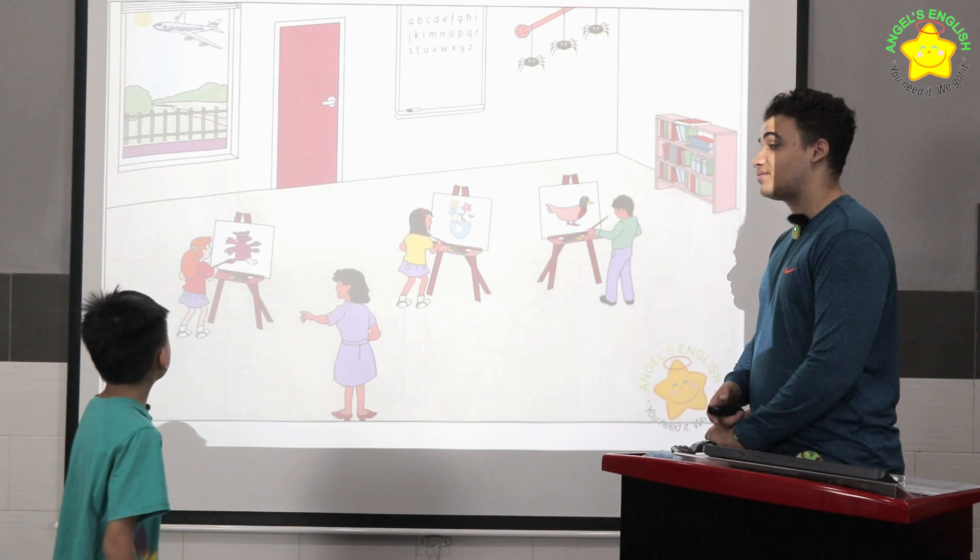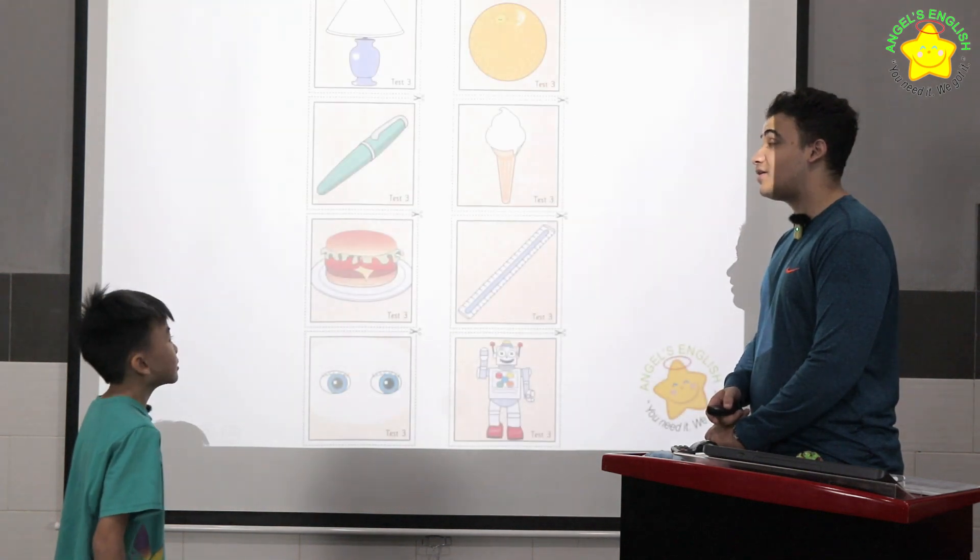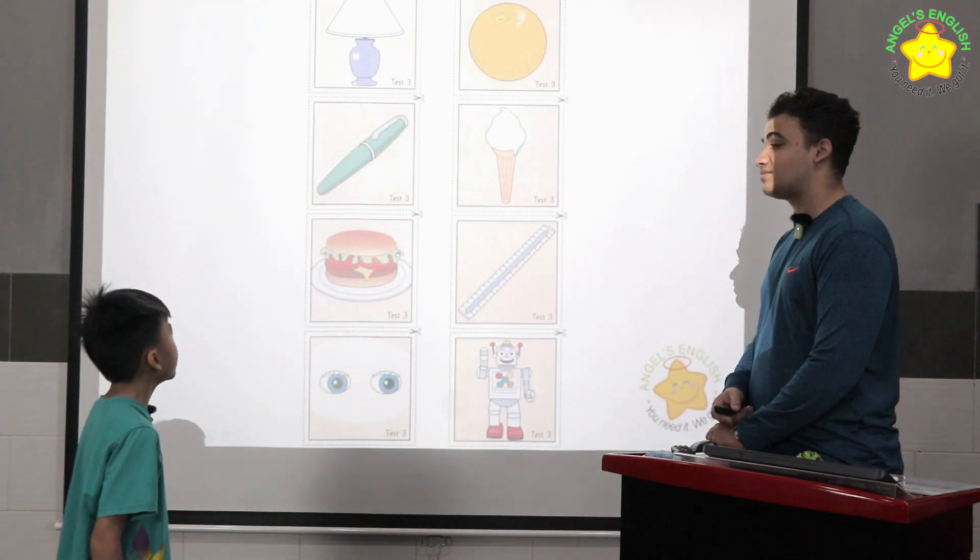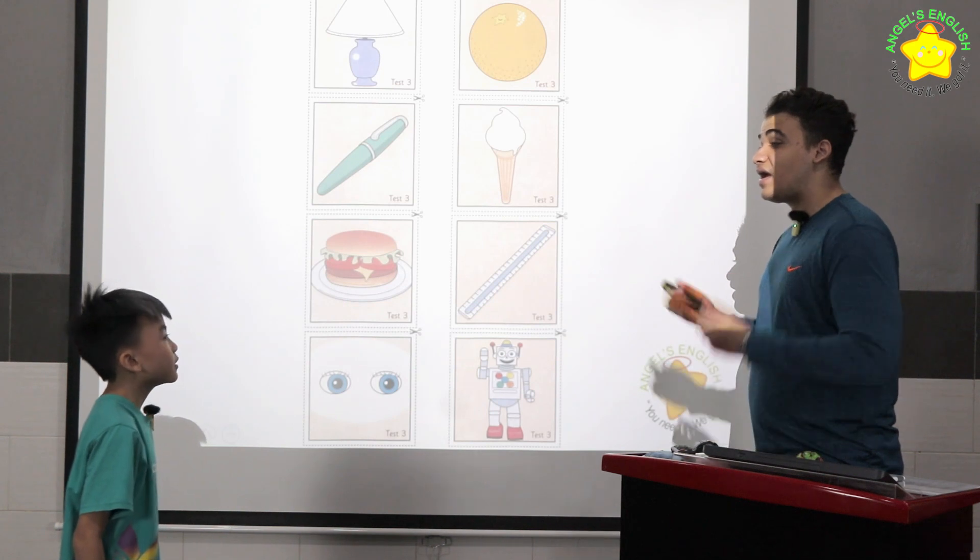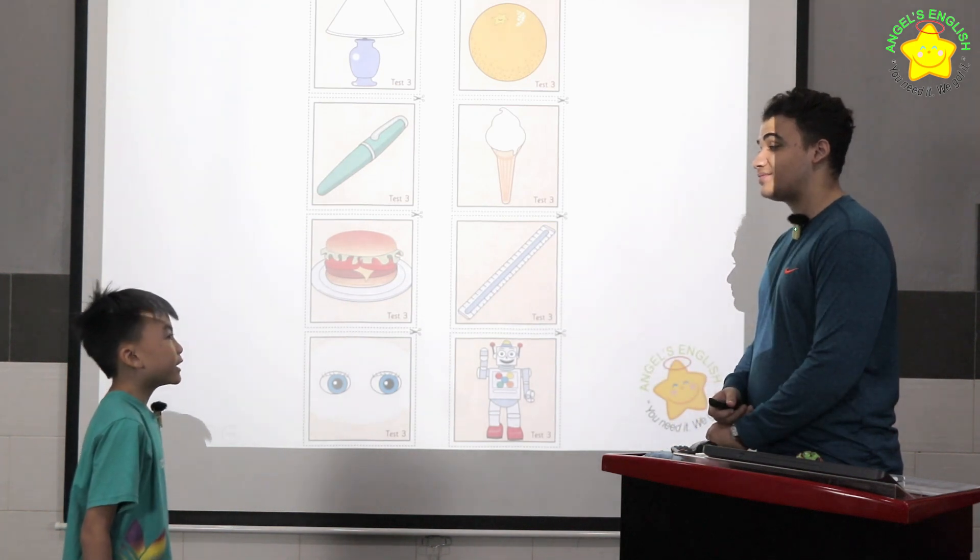What is it? It's pen. Good. What is it? It's lamp. Good. In what room can you see a lamp? A bedroom. Good.